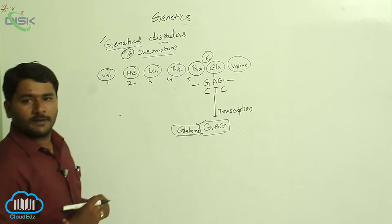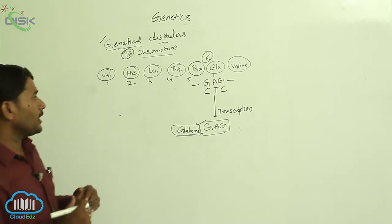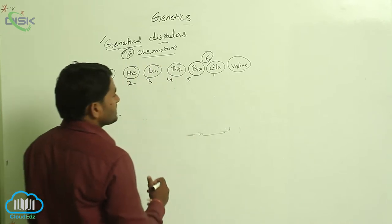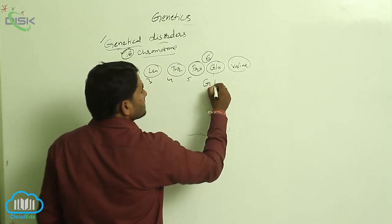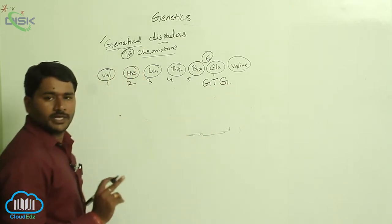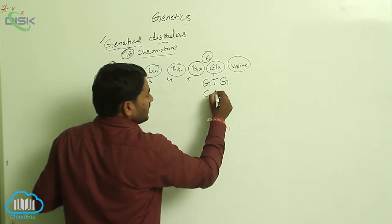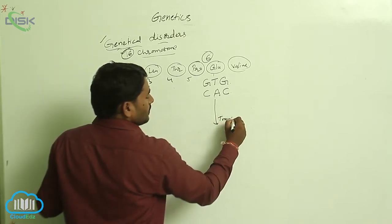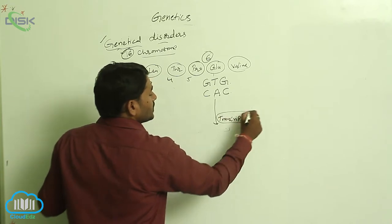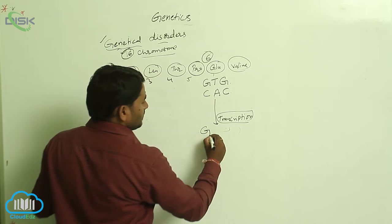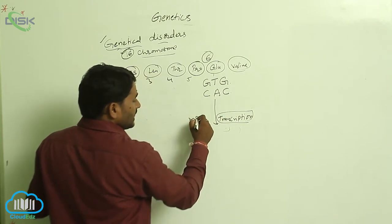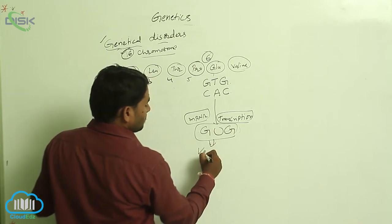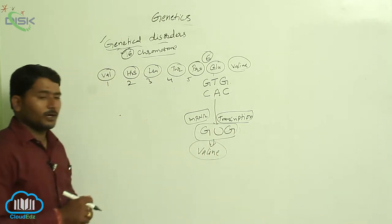Now, in point mutations, when point mutations take place in the sickle cell allele, in the place of A, it causes GTG. The complementary sequence becomes CAC. When transcription takes place, in the mRNA, instead of thymine, uracil is present — giving GUG, which codes for valine.